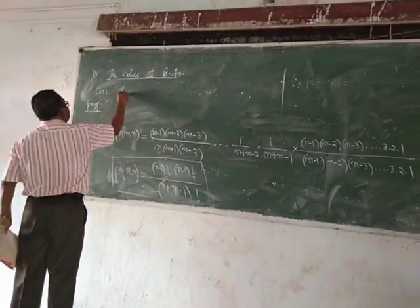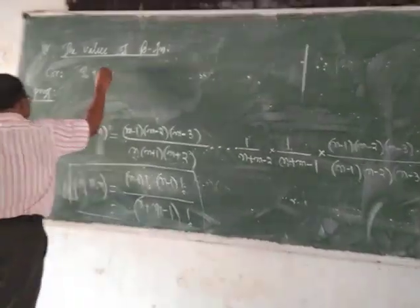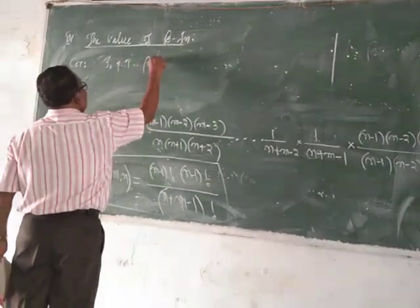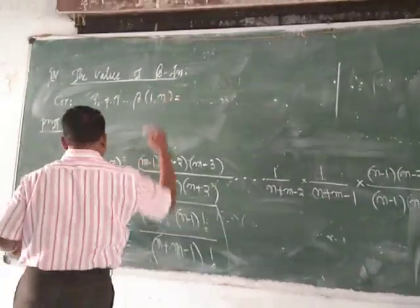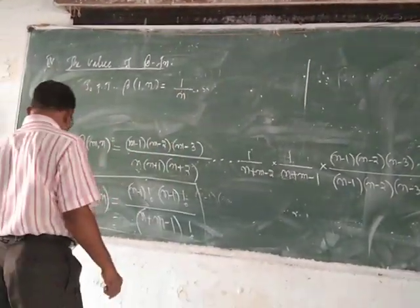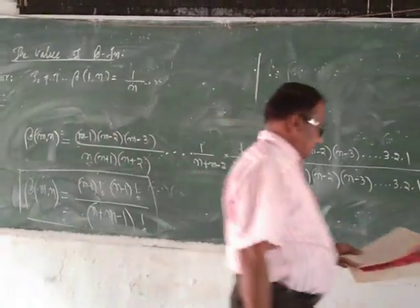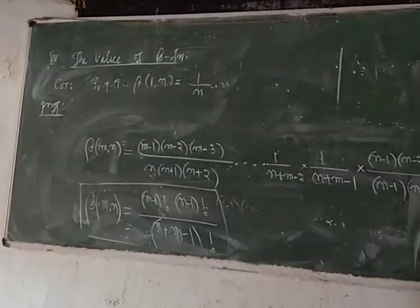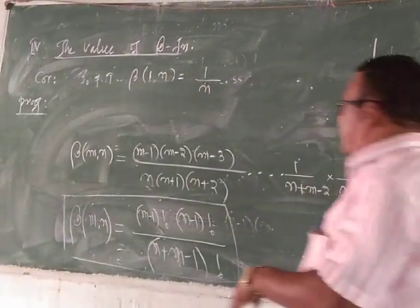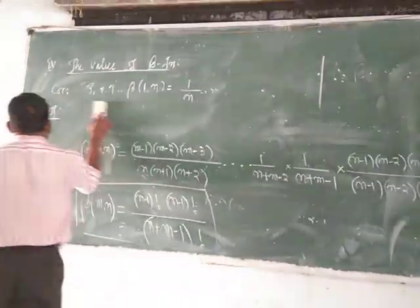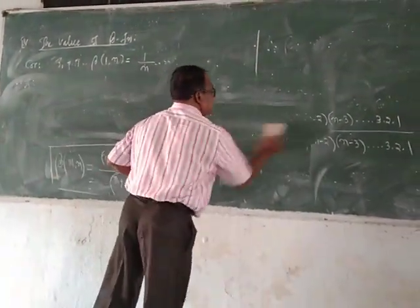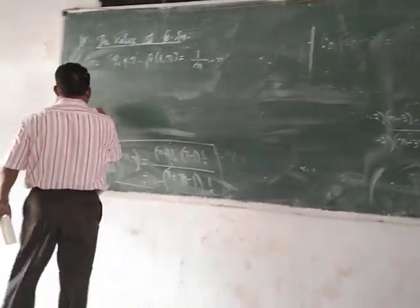We want to show that β(1,n) is equal to 1/n. By property number 4, we have this result, and we are going to use it to prove β(1,n) = 1/n.